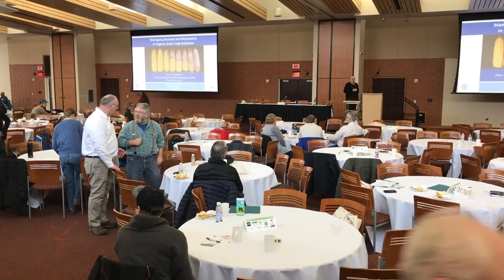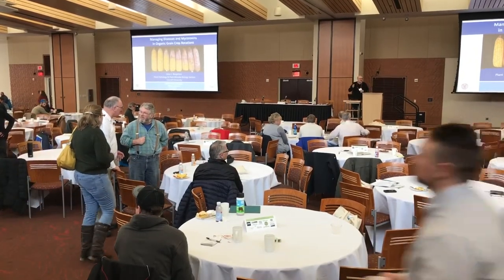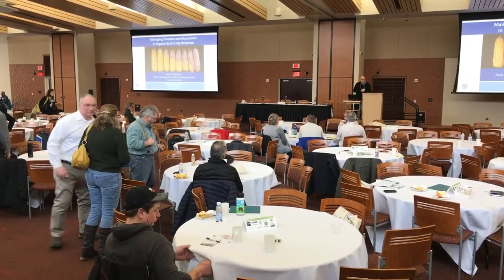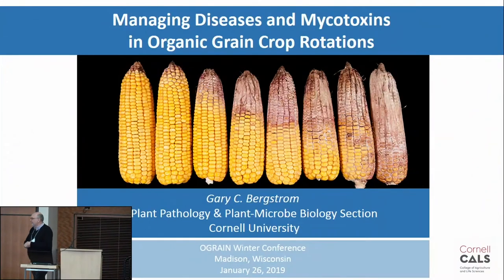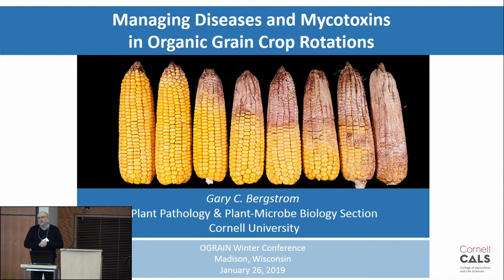Good morning, everybody. I know we're on a tight schedule, so we'll go ahead and get started. My name is Gary Bergstrom. I'm a plant pathologist at Cornell University in New York State, and I've been working as an extension plant pathologist in field crops for about 38 years. I don't pretend to be an organic crop specialist in any way, but I've had the pleasure of working with a lot of organic growers in my state and those transitioning from conventional into organic production.